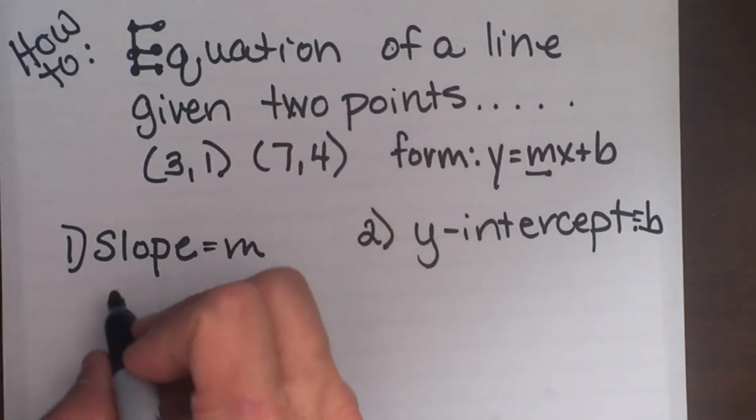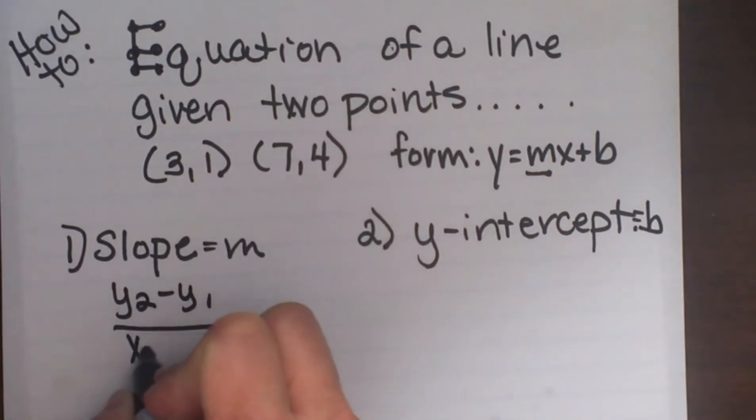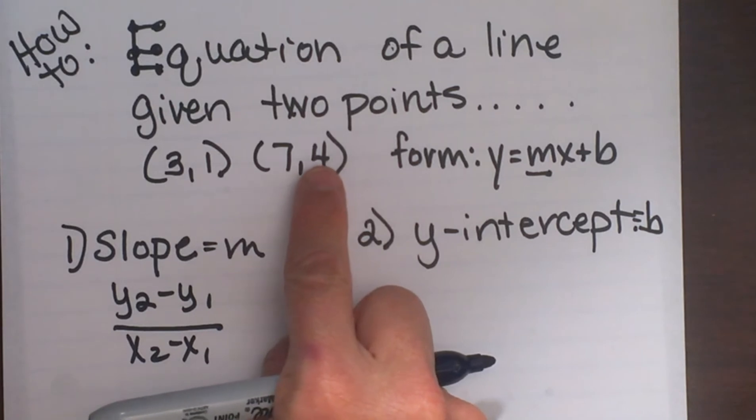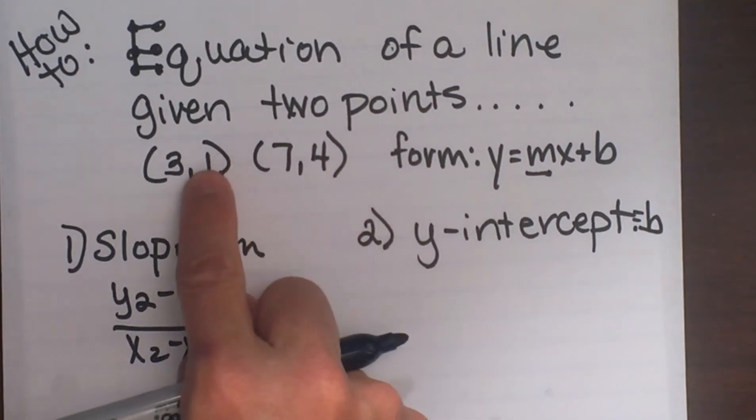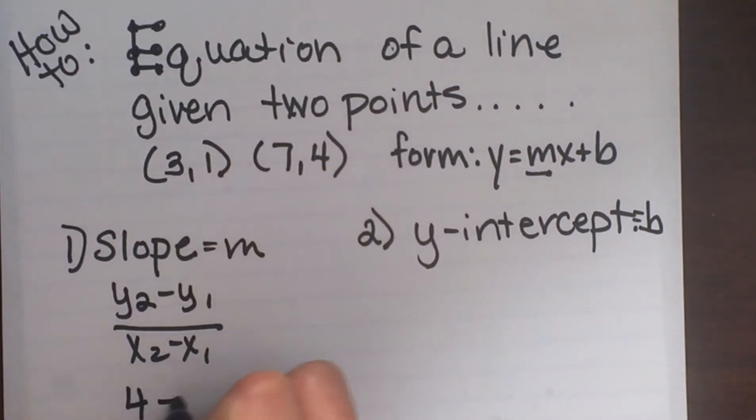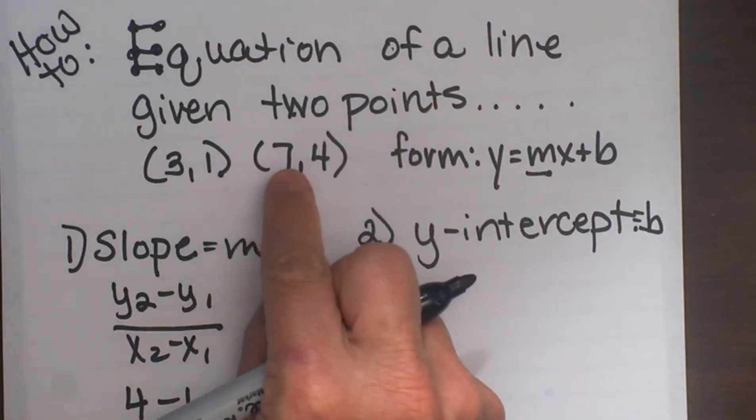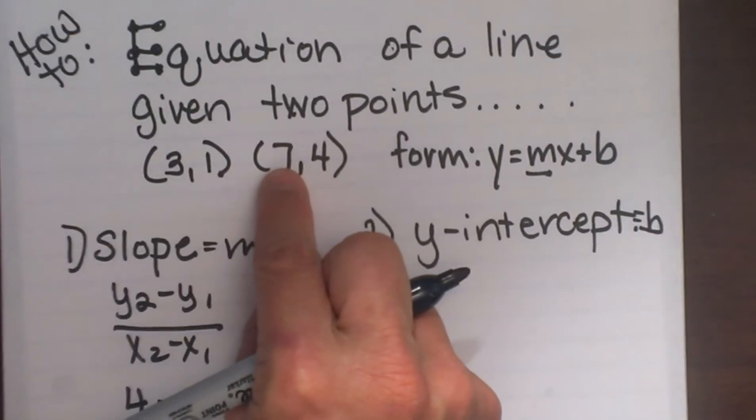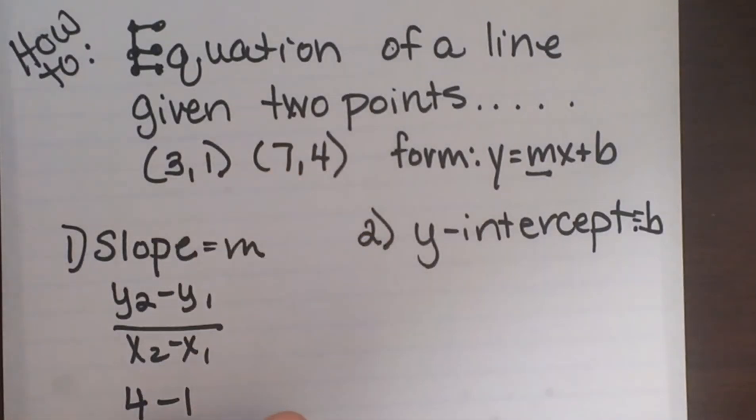For slope, you're going to use your slope equation: y₂ - y₁ over x₂ - x₁. So let's subtract our y's on top: 4 - 1 over... and if I use the 4 first, I will use 7 first... 7 - 3.